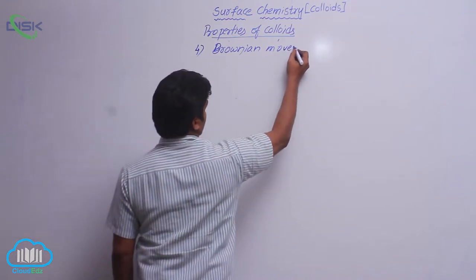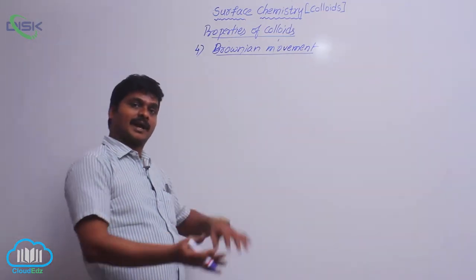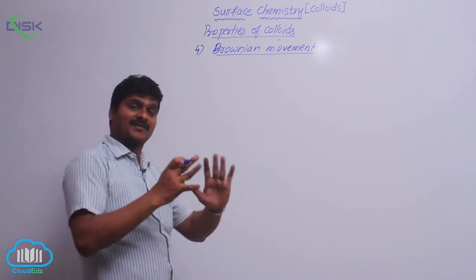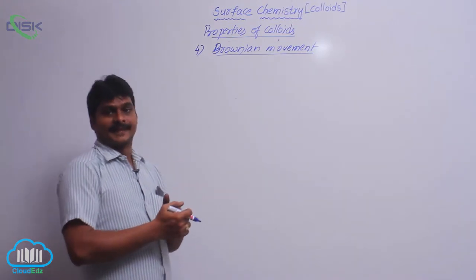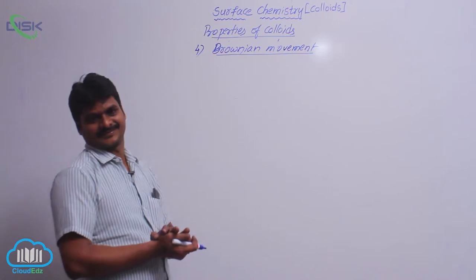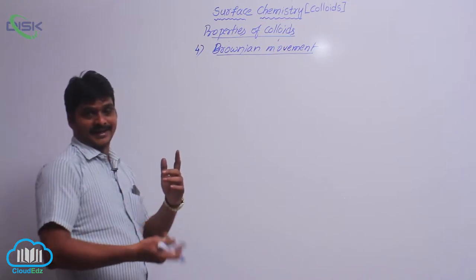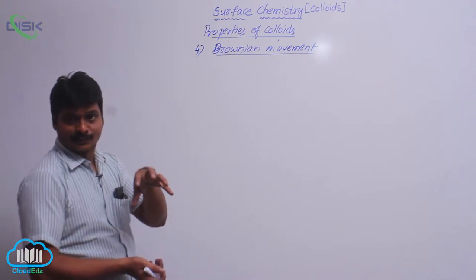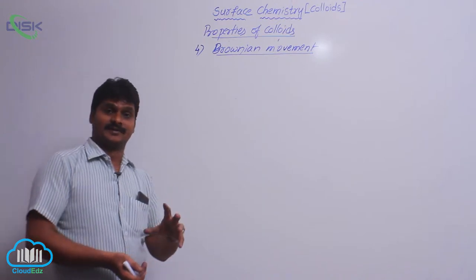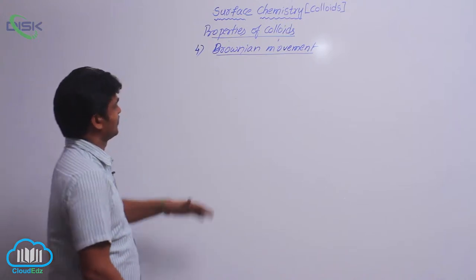Brownian movement. What is this? When the colloidal solution in the dark room is observed at right angles to the direction of light with a high power microscope — an ultra microscope — we can see that the colloidal particles in the solution appear as bright stars moving in a zigzag motion. This type of random zigzag motion is called Brownian movement.